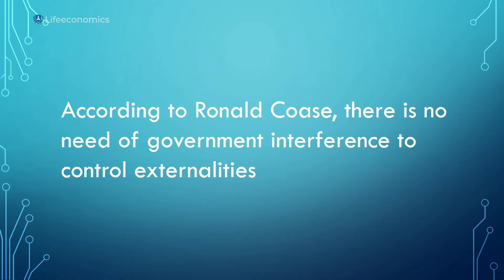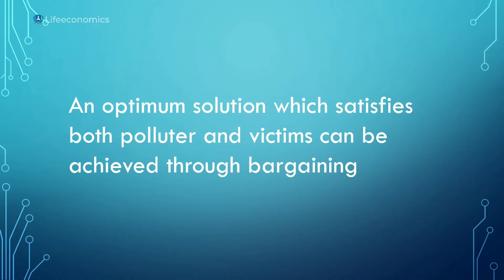If a person is well known, there are positive externalities. Other activities involve negative externalities and social cost. There is no need for government interference to control externalities. An optimum solution which satisfies both polluter and victim can be achieved through bargaining.